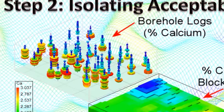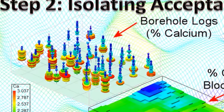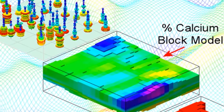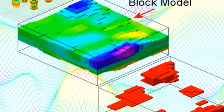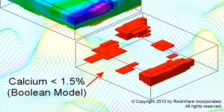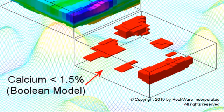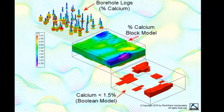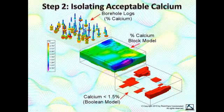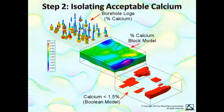Next, we see logs that depict relative calcium content. We start by creating a block model based on the measured calcium levels. Now, we subject the calcium model to a Boolean filter in which voxels containing more than 1.5% calcium are set to zero and therefore invisible in the diagram to the lower right. The voxels with less than 1.5% calcium are set to 1.0 and appear as red in the Boolean model diagram. This model represents acceptable calcium.